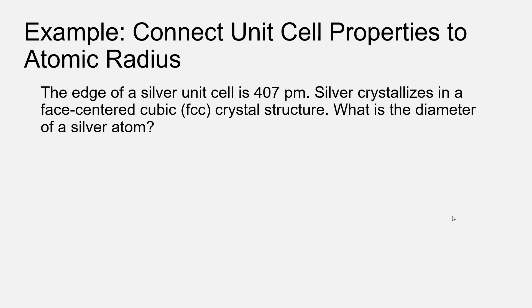So through x-ray experimentation, we find that the edge of silver, the pure elemental metal's unit cell, is 407 picometers. Silver crystallizes in a face-centered cubic (FCC) crystal structure. We would like to calculate the diameter of a silver atom.